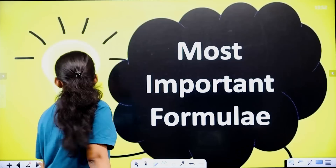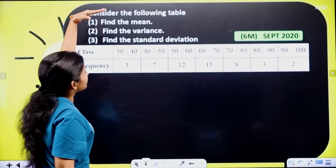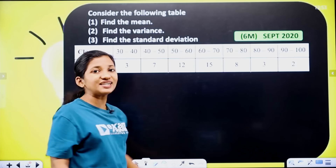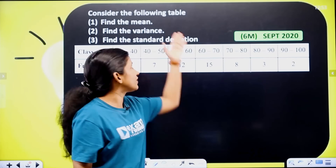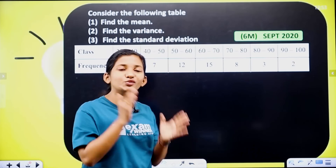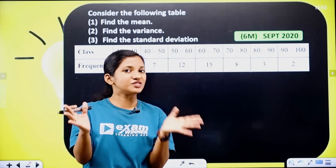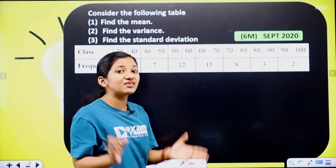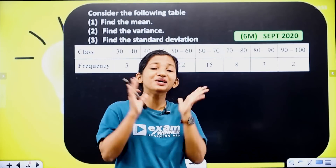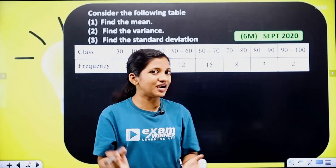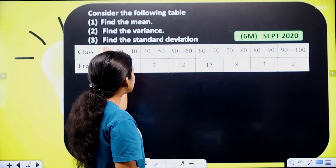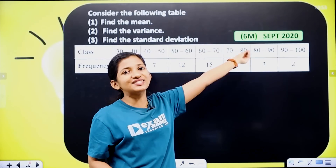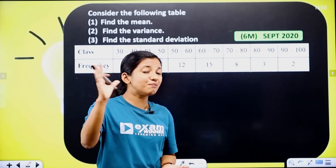We have a problem to solve. Consider the following table. Find the mean, find the variance, and find the standard deviation. First one: find the mean. Second one: find the variance. We have to study the variance and the standard deviation equation. Then we have a 6 mark in our pocket. Let's solve this problem.